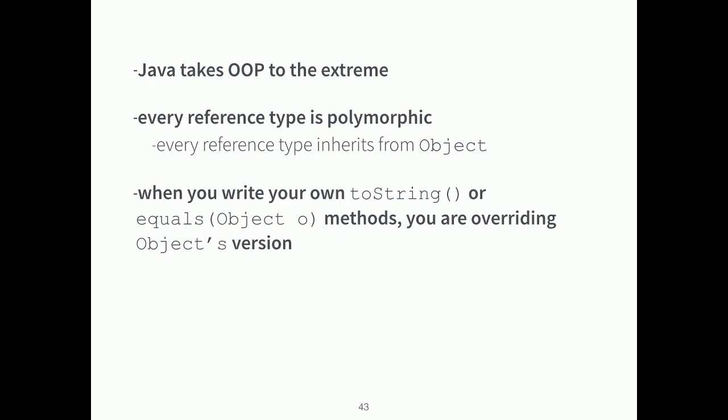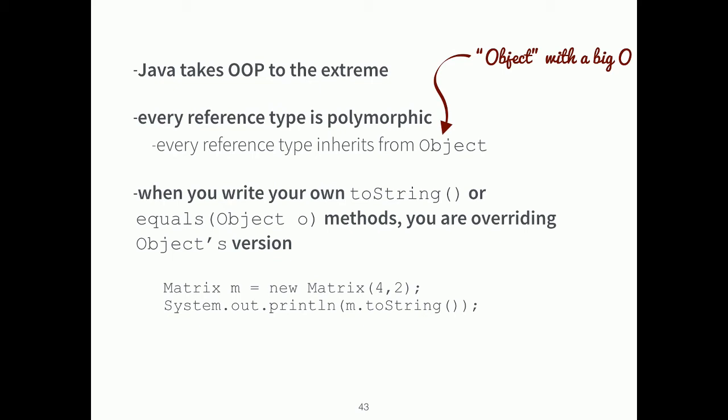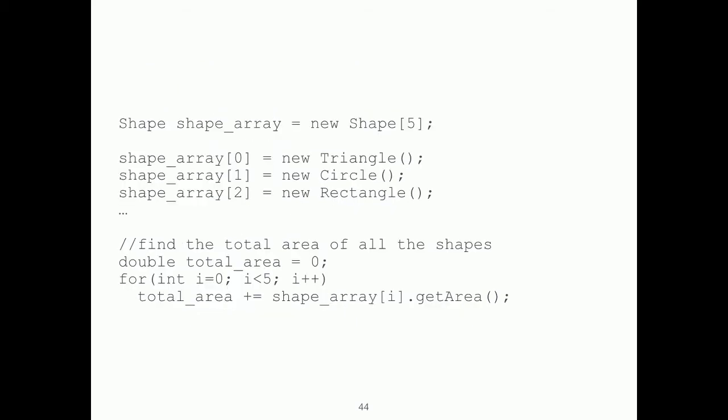Java takes OOP to an extreme. Every single reference type is polymorphic because every reference type inherits from Object — with a capital O. So when you write your own toString or equals methods, you're actually overriding Object's version. For example, in assignment one you're working with a Matrix class. When you call M.toString(), this is a form of polymorphism because Matrix is also an Object — but you'll call the more specific toString method you're writing for the assignment.